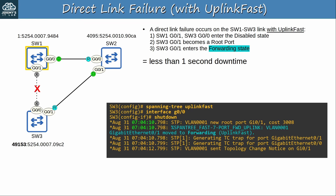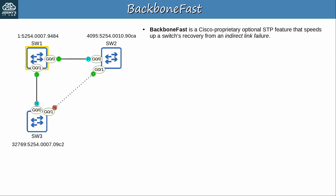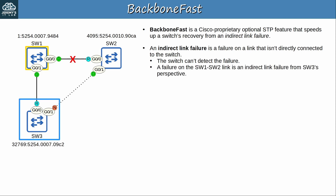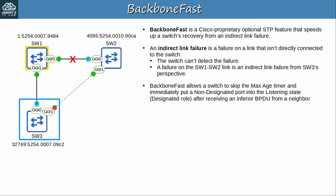Now let's move on to BackboneFast. BackboneFast is another Cisco proprietary optional STP feature, and it speeds up a switch's recovery from an indirect link failure. An indirect link failure is a failure on a link that isn't directly connected to the switch, meaning the switch can't detect the failure — unlike when a directly connected link goes down. A failure on the SW1–SW2 link is an indirect failure from SW3's perspective; SW3 won't be able to detect if that link goes down. BackboneFast allows a switch to skip the max age timer and immediately put a non-designated port into the listening state and the designated role, after receiving an inferior BPDU from a neighbor.